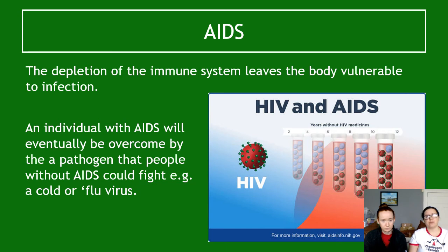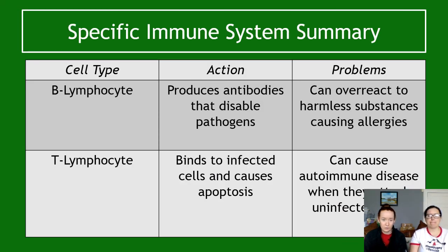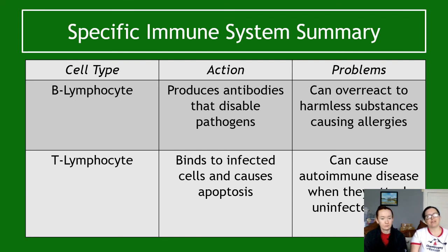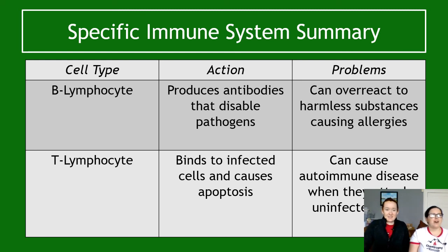An individual with AIDS will eventually be overcome by a pathogen that people without AIDS could fight — even a cold or flu could be fatal because they have no immune system left. To summarize: B lymphocytes produce antibodies that disable pathogens and can overreact to harmless substances causing allergies. T lymphocytes bind to infected cells and cause apoptosis, but can cause autoimmune diseases when they attack uninfected cells. Next up is vaccination.